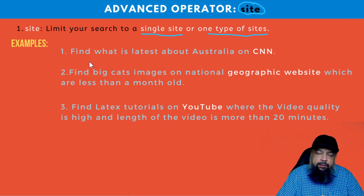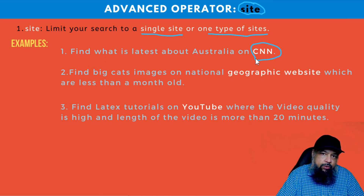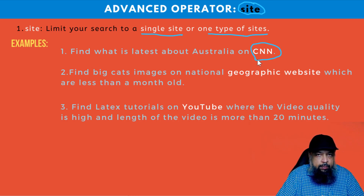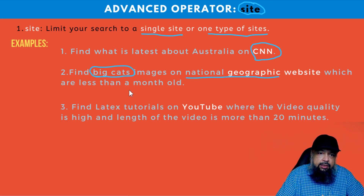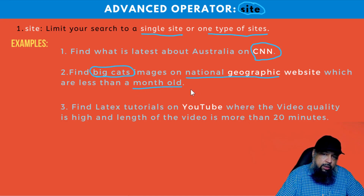The first scenario is that I want to find what is latest about Australia on CNN, which is a news website, so I am only concerned with what that website is showing about Australia. The second scenario is that I want to see images of big cats, not on any website, but specifically on National Geographic's website, which is a fantastic, authentic website. I also want to see only the latest images, which are not more than one month old.